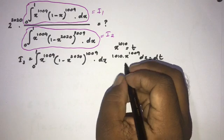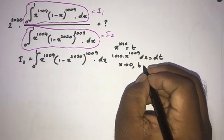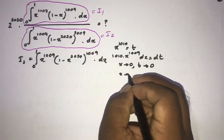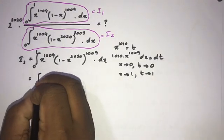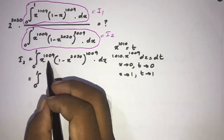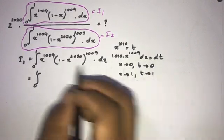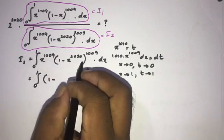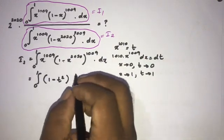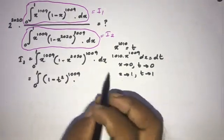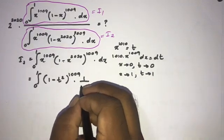For the limits: when x approaches 0, t approaches 0; when x approaches 1, t approaches 1. So the limits remain 0 to 1. Now x to the 1009 dx equals dt over 1010. And (1 minus x to the 2020) becomes (1 minus t squared) since x to the 1010 equals t, so x to the 2020 equals t squared. This gives (1 minus t squared) to the 1009 times dt over 1010.